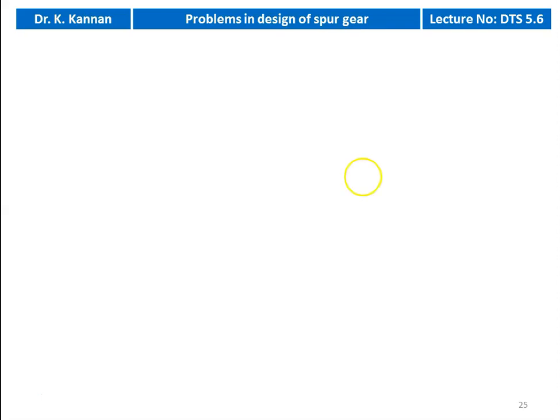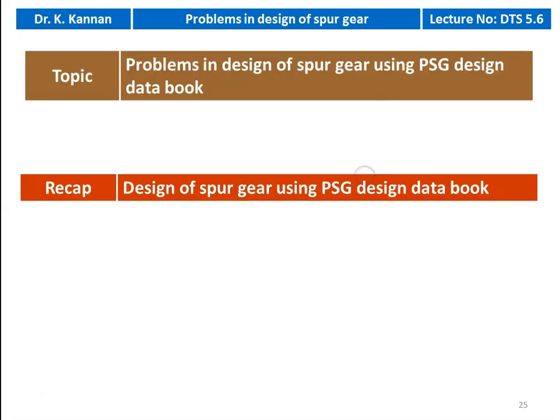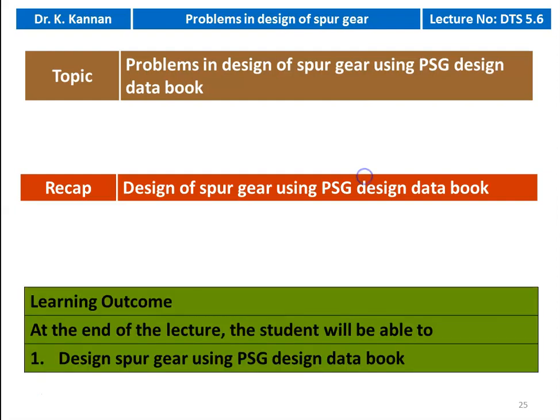We are going to solve problems in the design of spur gear. In the earlier two lectures, we discussed the design procedure for the spur gear using the PSG data book. In the previous lecture, we solved two problems in the design of spur gear. Now we continue with the problem. In this lecture, we solve two more problems from the Anna University question paper in the design of spur gear.